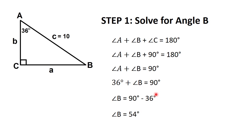We have obtained 54 degrees as the measure of angle B. We have two more parts unknown: side A and side B. You can solve for side A first, or you can solve for side B first — it is up to you. But for my solution, I prefer to solve for side A first, thinking of the alphabetical order.